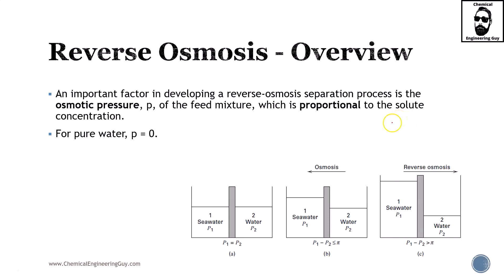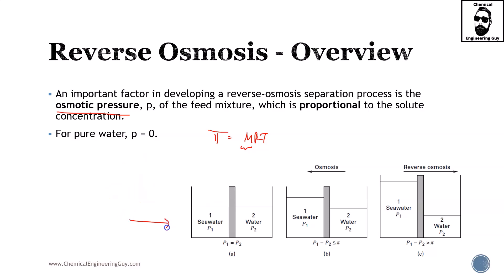An important factor in developing a reverse osmosis separation process is the osmotic pressure of the feed, which is proportional to the solid concentration. The osmotic pressure π is given by: π = M·R·T, where M is the molarity (concentration), R is the ideal gas constant, and T is temperature. For pure water with no dissolved ions, the osmotic pressure is zero — so if both sides have pure water, the pressure difference is zero.